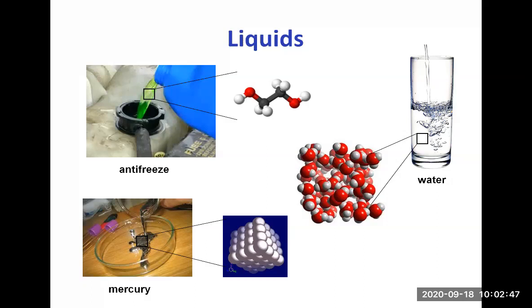And here, just mercury atoms. Antifreeze is C2H6O2. The formula, carbon, hydrogen and oxygen in that particular molecule.